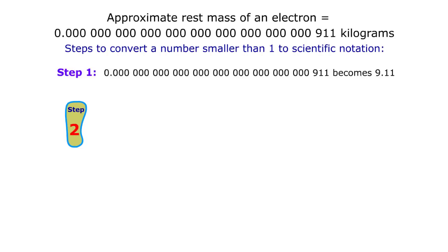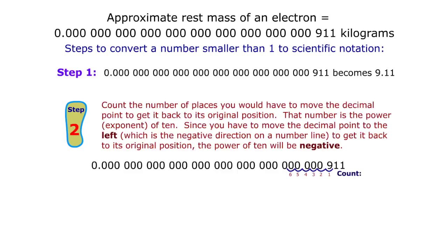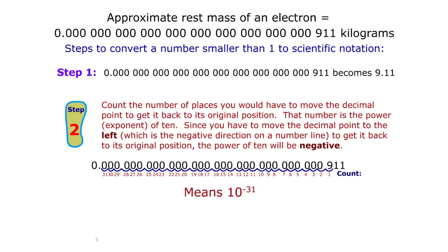Step 2: Count the number of places you would have to move the decimal point to get it back to its original position. That number is the power, or exponent, of 10. Since you have to move the decimal point to the left, which is the negative direction on a number line, to get it back to its original position, the power of 10 will be negative. We count 31. This means 10 to the negative 31st power.